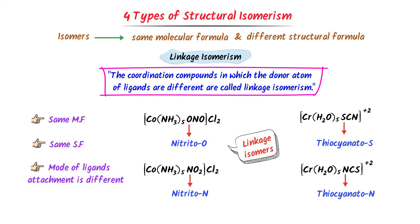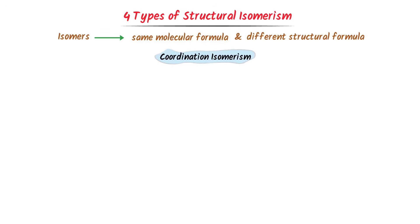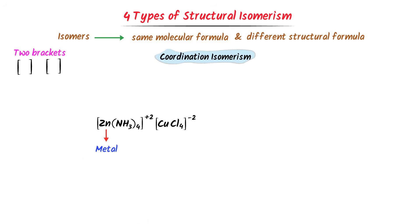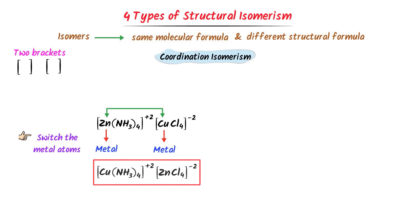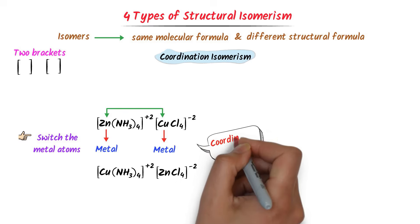The fourth type of structural isomerism is coordination isomerism. The easy trick is that these compounds always have two brackets. For example, consider a compound where the first coordination sphere has zinc and the second has copper. We switch the metal atoms between the two complex ions — replacing copper with zinc and zinc with copper — giving [Cu(NH3)4][ZnCl4]. These two isomers are called coordination isomers.